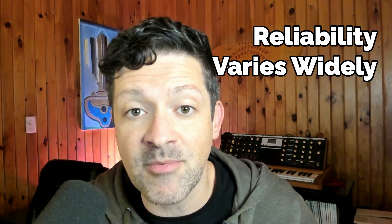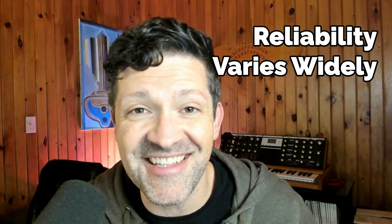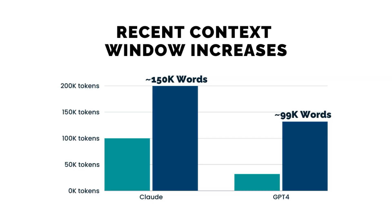It all depends on how reliably the model can access the information in the context window. Both Anthropic's Claude and OpenAI's GPT-4 have recently pushed the boundaries of their context windows. Claude recently doubled its context window to 200,000 tokens, or roughly 470 pages of text, and GPT-4 boosted its limit to a context window of 128,000 tokens. However, as testing reveals, just fitting more into that context window doesn't guarantee the model can utilize it effectively. I've encountered many instances where these models can't recall things in their context windows.